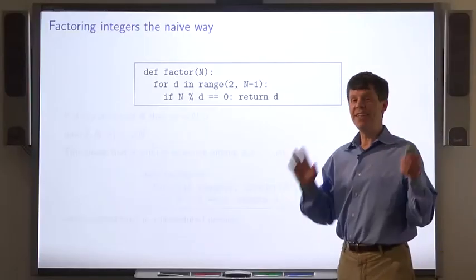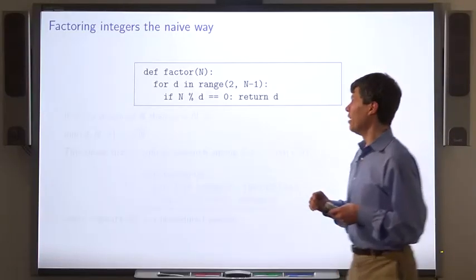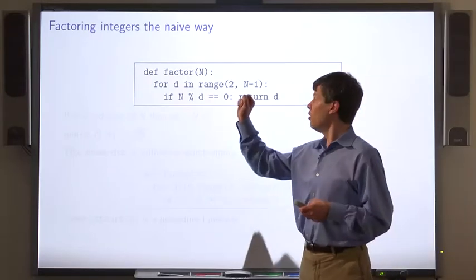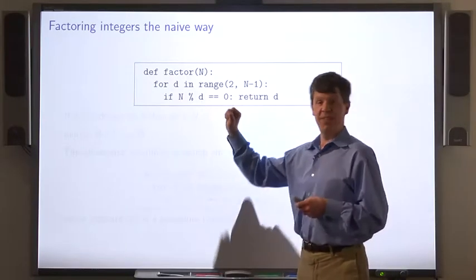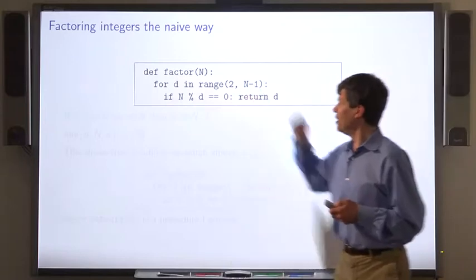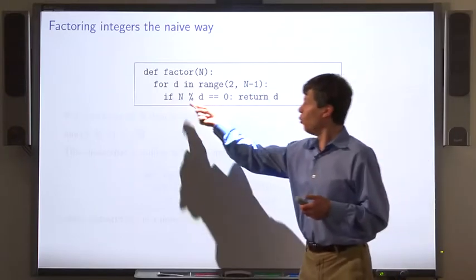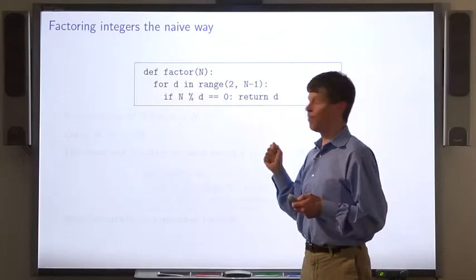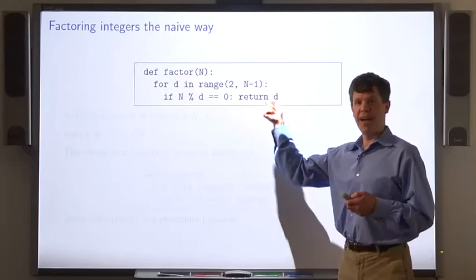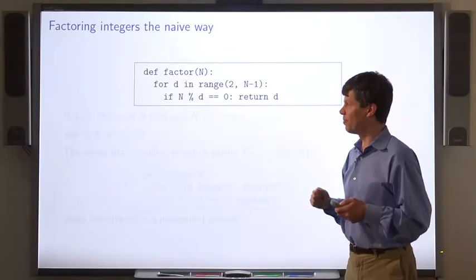Here's a very simple algorithm for factoring an integer. It tries all of the possible divisors from 2 to n minus 2 and tests whether n is divisible by each one of them. The first divisor it finds, it returns.